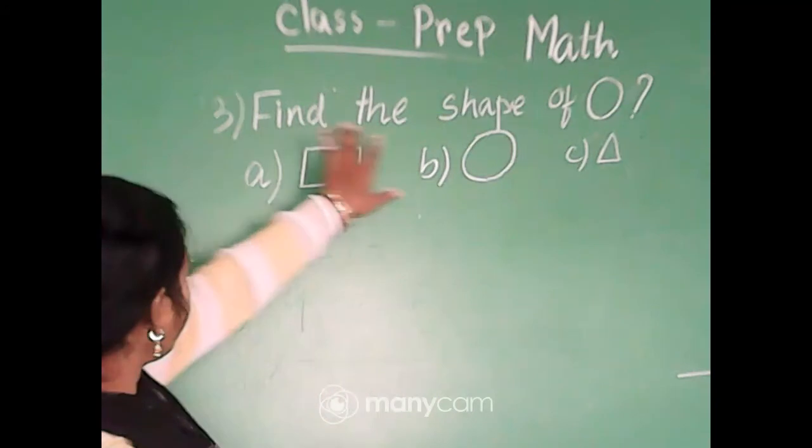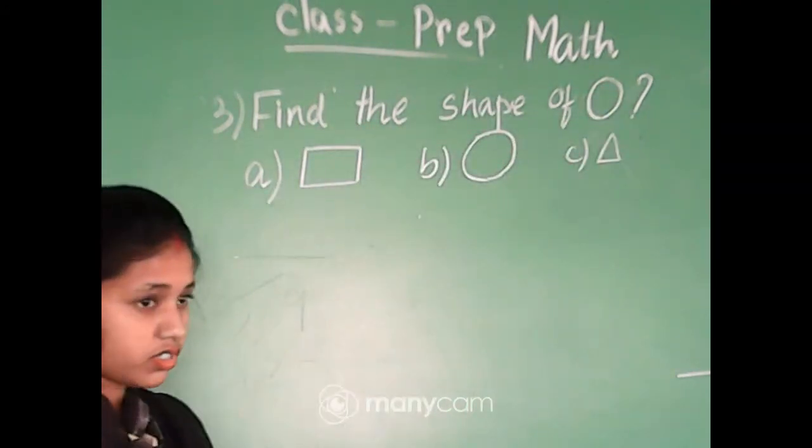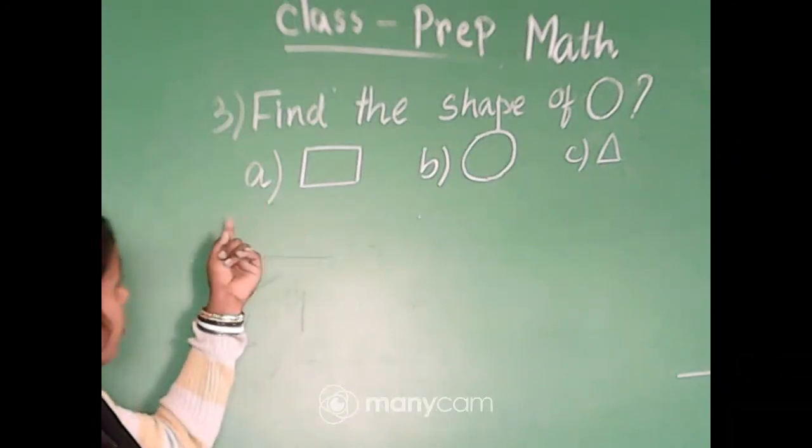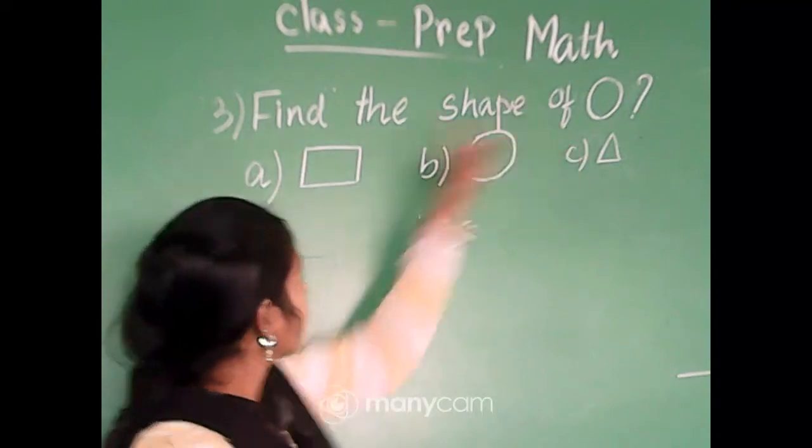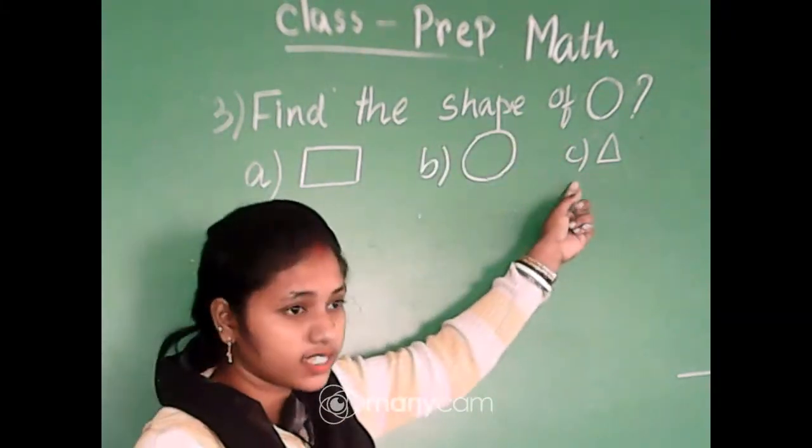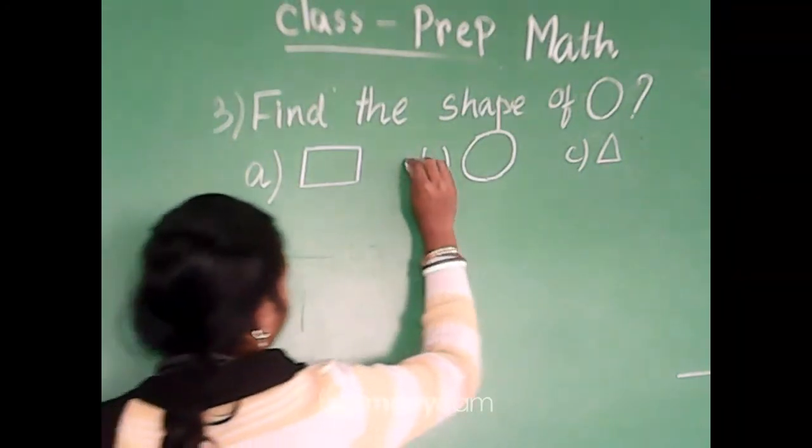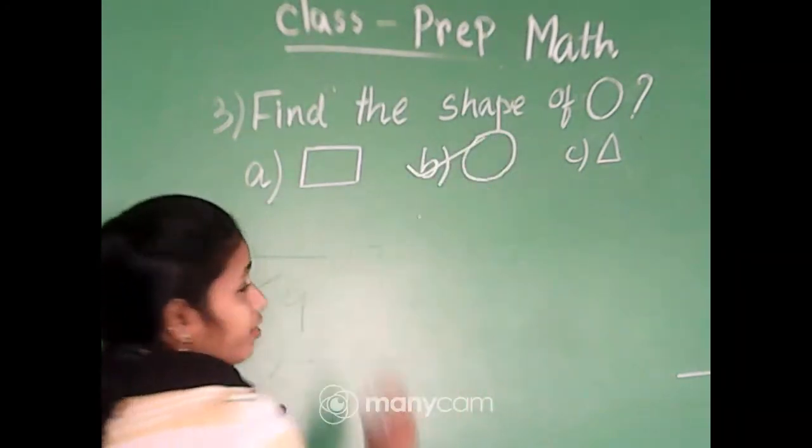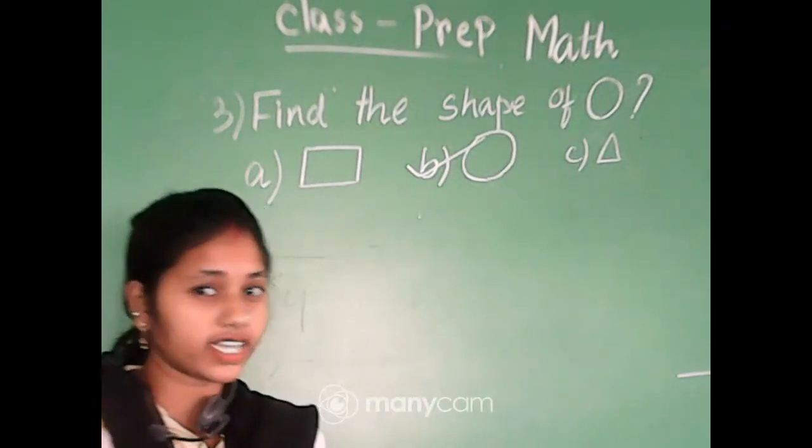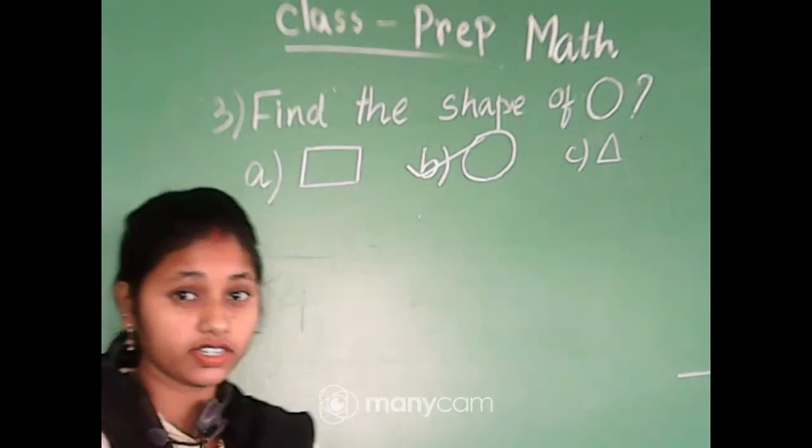Find the shape of circle. Can you match which shape it is with option A, B, or C? Yes, you are correct, option B. So this is the shape of a circle, shape of a circle, and you all know the example of circle is wheel, finger ring, okay?